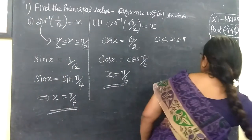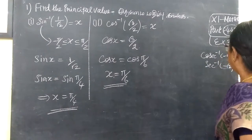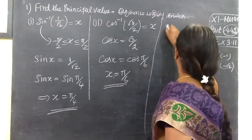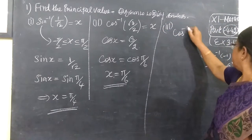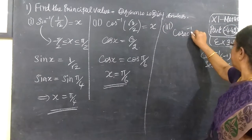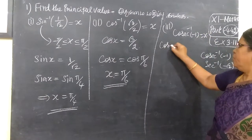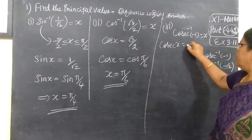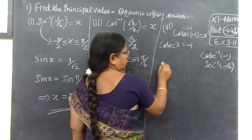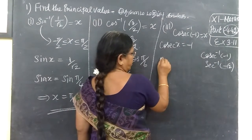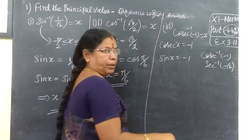Answer 1 is cosecant inverse. If you look at the third one, cosecant inverse minus 1 is equal to some x. That means cosecant x is equal to minus 1. If you look at the third one, it is minus 1 by 1.